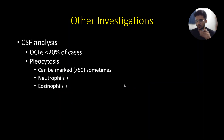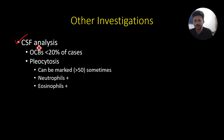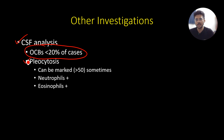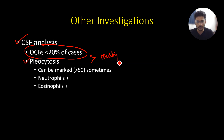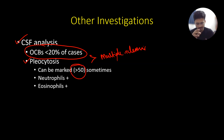Now coming to investigations. We will do an MRI. For CSF analysis, oligoclonal bands are not as common as in MS — seen in less than 20% of cases. The pleocytosis is significantly more compared to multiple sclerosis; sometimes more than 50 cells can be seen. The cell population tends to be more neutrophils and eosinophils.